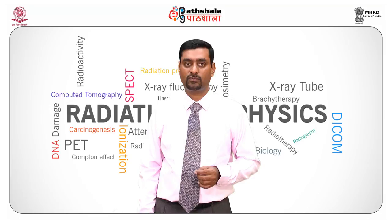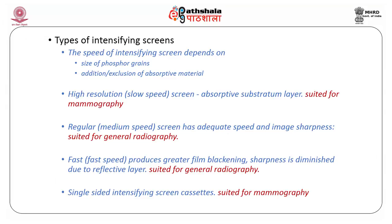The various types of intensifying screen depend on the size of the phosphor grain and the addition or exclusion of absorptive material. High-resolution, slow-speed intensifying screens with absorptive substratum are used for mammography. For regular medium speed, there is adequate speed and image sharpness well suited for routine radiography. Fast speed produces greater blackening of the film but sharpness is slightly diminished due to the reflective layer, though it is still suited for general radiography. Single-sided intensifying screens are well suited for mammography where better image resolution is needed.